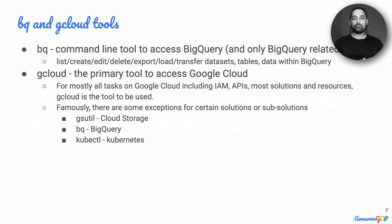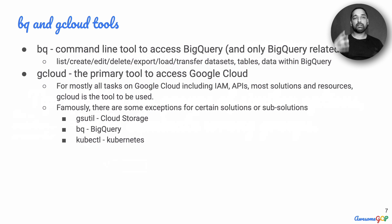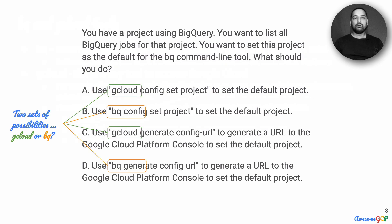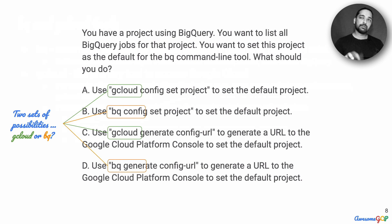In the same way that we have a distinct distinction between gcloud and kubectl — gcloud allows you to set up VMs and clusters within GKE, the Google Kubernetes Engine, whereas kubectl is the tool that allows you to make changes to the cluster — in a similar way, bq is the tool that allows you to work with data within BigQuery, whereas gcloud is still the tool to use when setting up permissions on BigQuery. gcloud is the tool that allows you to set project defaults and configuration.